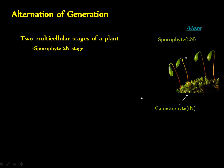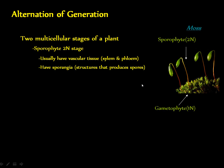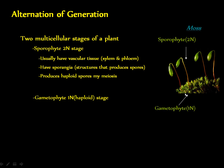Both stages are multicellular. The sporophytes are the diploid, or 2n, stage. Most sporophytes have vascular tissue — xylem and phloem. They have sporangia, which are structures the plant produces to make its spores. The spores are haploid, meaning the diploid sporophyte makes these spores by meiosis in order to make them haploid, and it does all of this inside its sporangium structure.